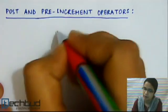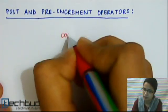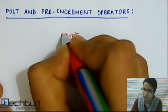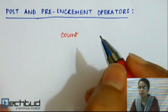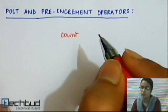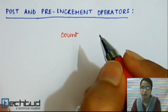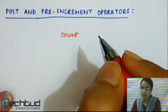Let's say you have a variable COUNT. The POST or PRE-increment operator helps you increment the value of your variable by one at a time.